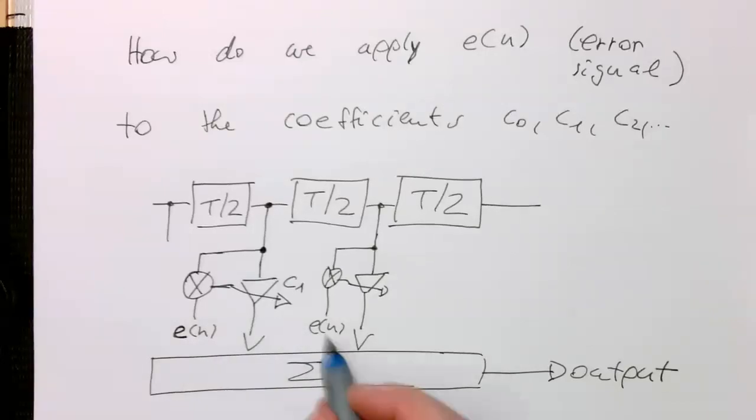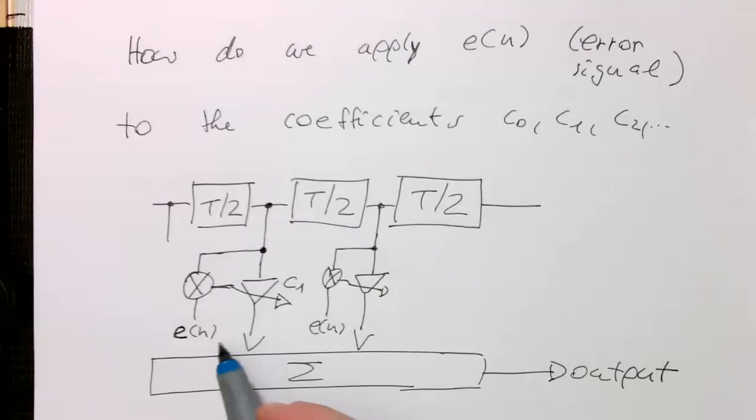So remember the E is an error signal. So if the error is zero, so the expected symbol equals the symbol which is received, then these weights won't change.